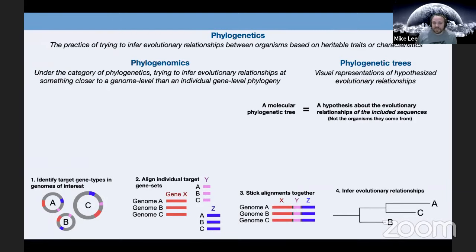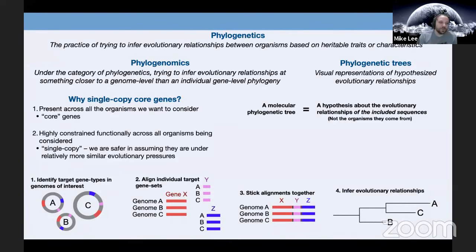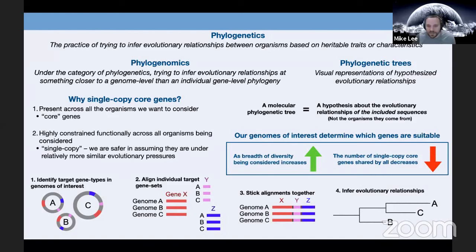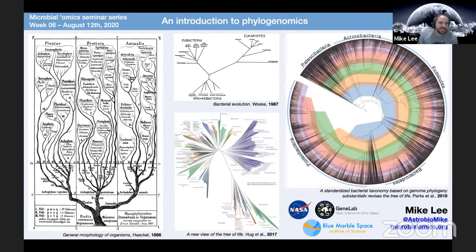Re-hitting the main points: a molecular phylogenetic tree is a hypothesis about the included sequences and not directly the organisms they come from — we are making some assumptions to do that, which is easy to forget and helps to keep in mind. Why single copy core genes? We want things to be present across everything — that's the 'core' part — and we want things to be highly functionally constrained, which we're much safer pursuing with single copy rather than multi-copy genes. Why is there no one best set? Because the organisms we're considering determine the most appropriate genes to utilize and give us the best resolution for the diversity we're spanning.